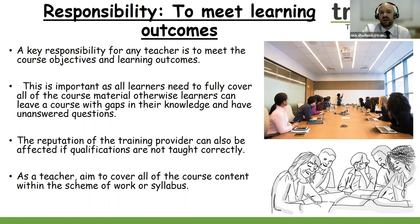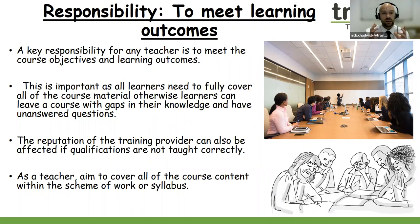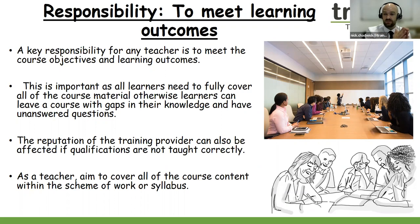Responsibility number one: to meet learning outcomes. A key responsibility for any teacher is to meet the course objectives and learning outcomes. When learners leave your course, they should be fully confident that they've achieved the qualification, can take their skills with them, perform their job role correctly, and leave with no gaps in their knowledge. The reputation of the organization is crucial here — you want learners to do a good job. Follow your scheme of work and lesson plans fully to ensure nothing is missing.